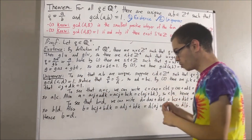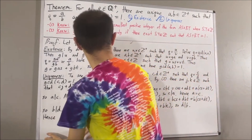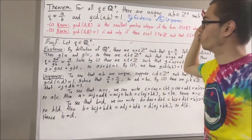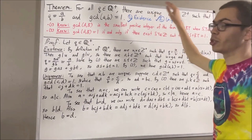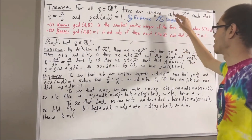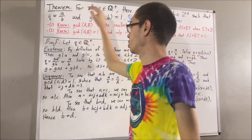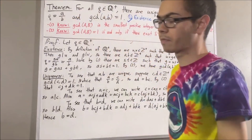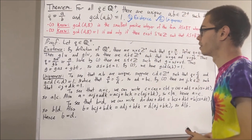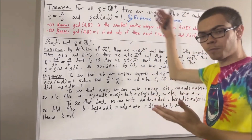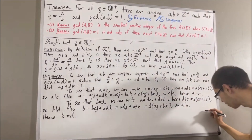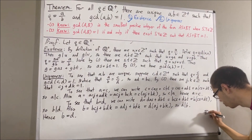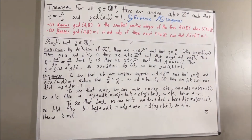With existence and uniqueness together, we have proven that there exists a unique pair of positive integers which satisfy these two conditions. So we have proven the theorem, and this completes the proof.